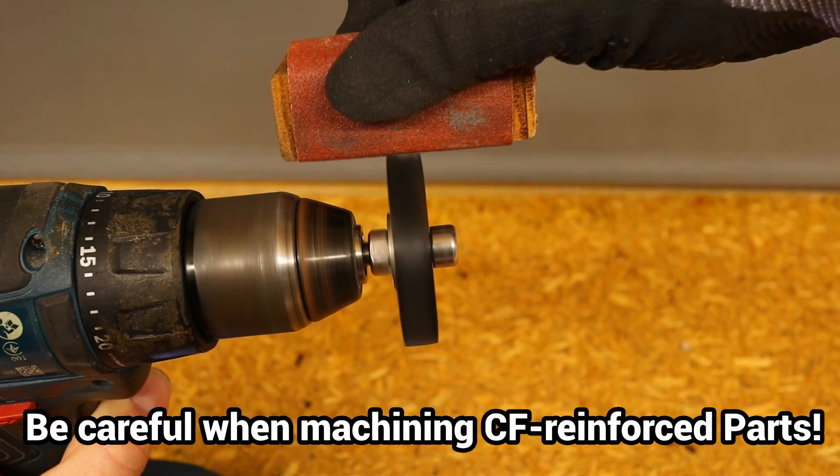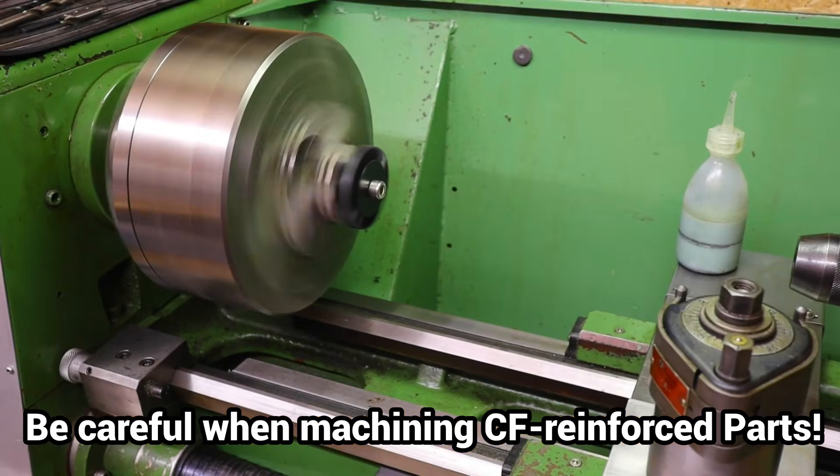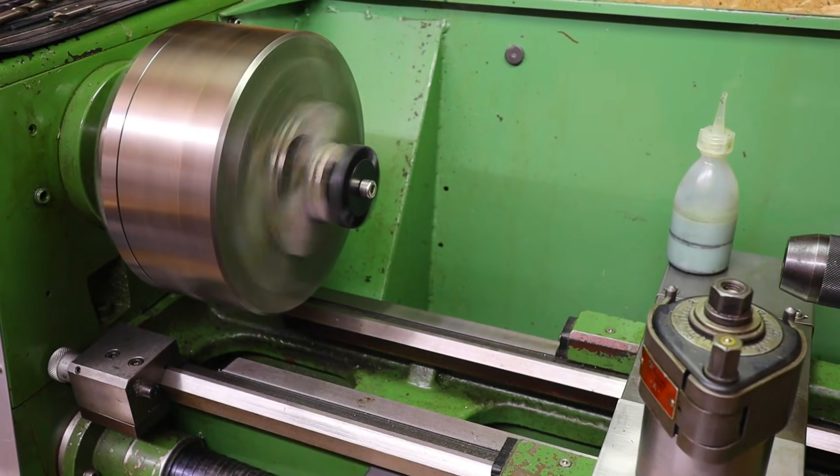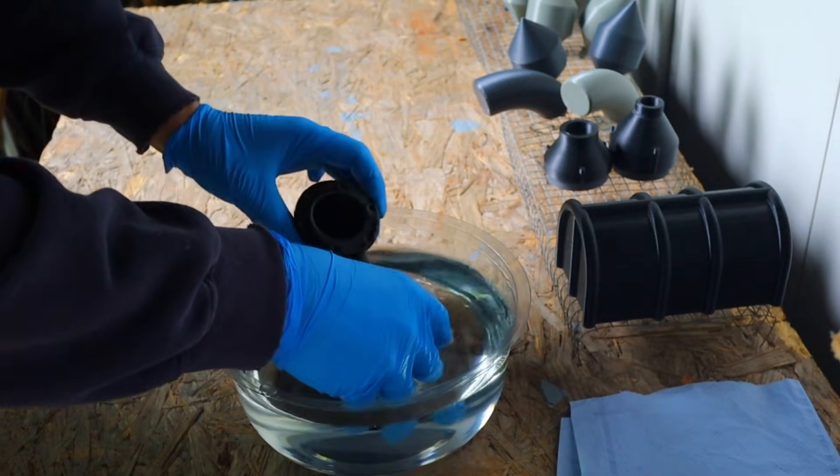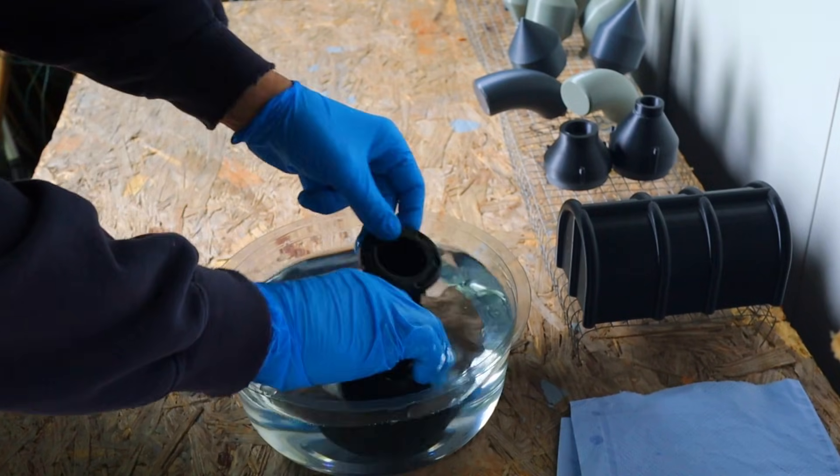You should therefore take care when working with PA12CF parts, avoid inhaling grinding dust, pay attention to cleanliness and wear gloves. Parts that are often touched should be sealed so that the fibers are encapsulated and can no longer cause damage.